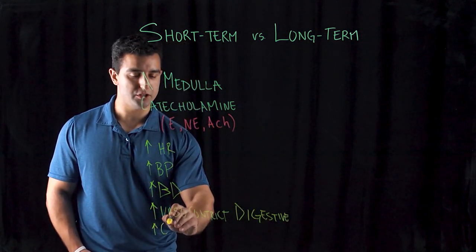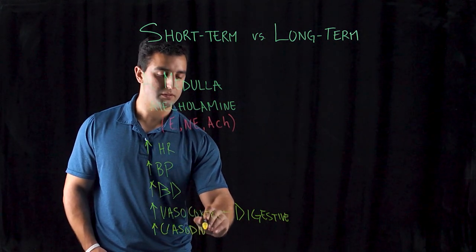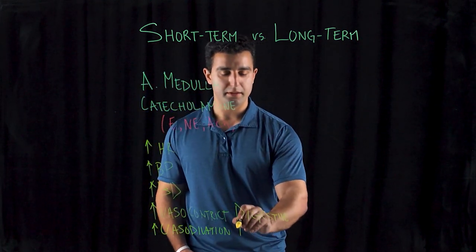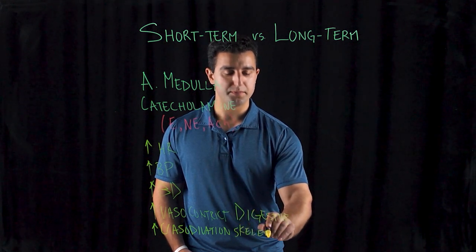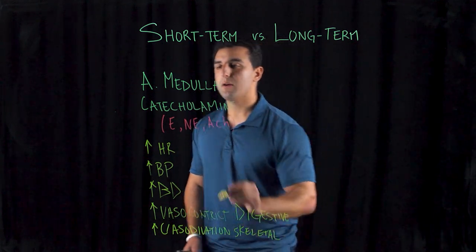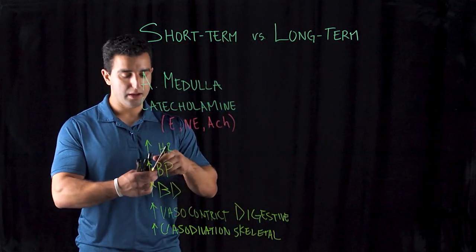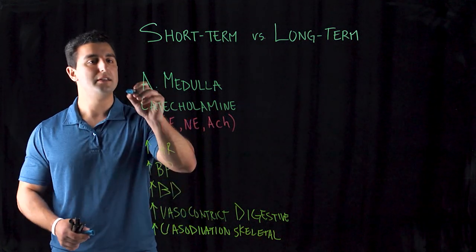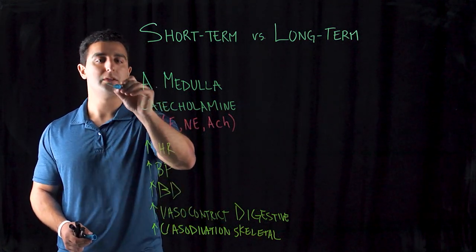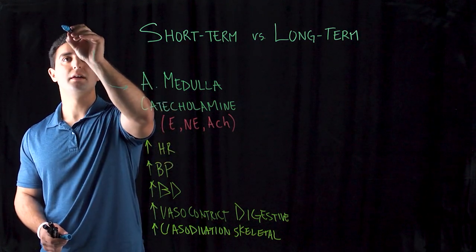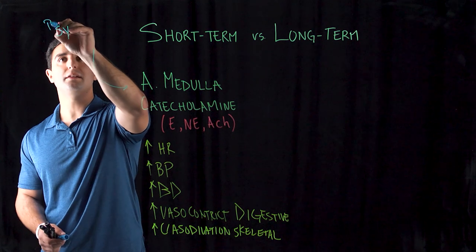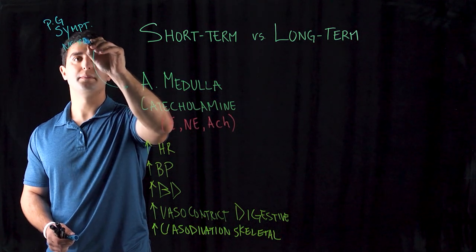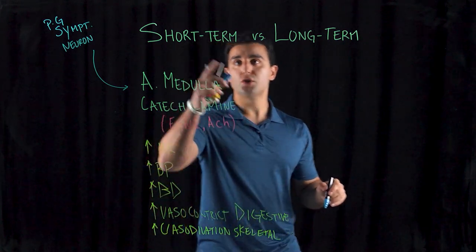You have vasodilation in the skeletal system, and your pupils become bigger. All of these happen due to the different hormones secreted from the adrenal medulla. What triggers this is sympathetic activity, generated from preganglionic sympathetic fibers coming in from the central nervous system — these preganglionic sympathetic neurons come in and generate this response during short-term stress.